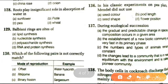Next question: during ecological succession, which statement is correct? The gradual and predictable change in species composition occurs in a given area; establishment of a new biotic community starts very fast in its primary phase; the number and types of animals remain constant; or the changes lead to a community in nearly equilibrium with the environment called the climax community. The answer is gradual and predictable change in species composition occurs in a given area.